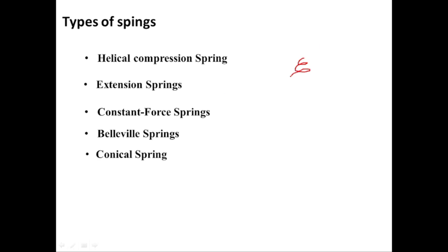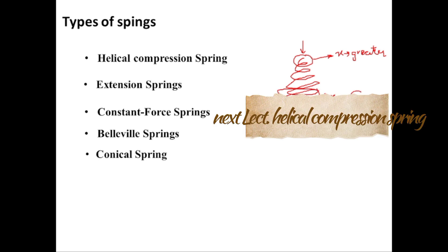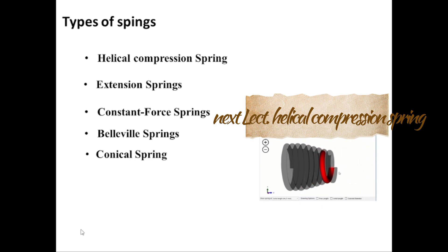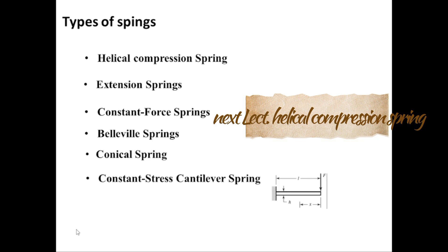Another type is the conical spring, whose shape is like a cone — the diameter gradually increases or decreases. When force is exerted to compress it at the end where the diameter is small, the deflection will be greater there, and smaller at the bottom. Here is the animation showing how the conical spring can be extended or compressed.